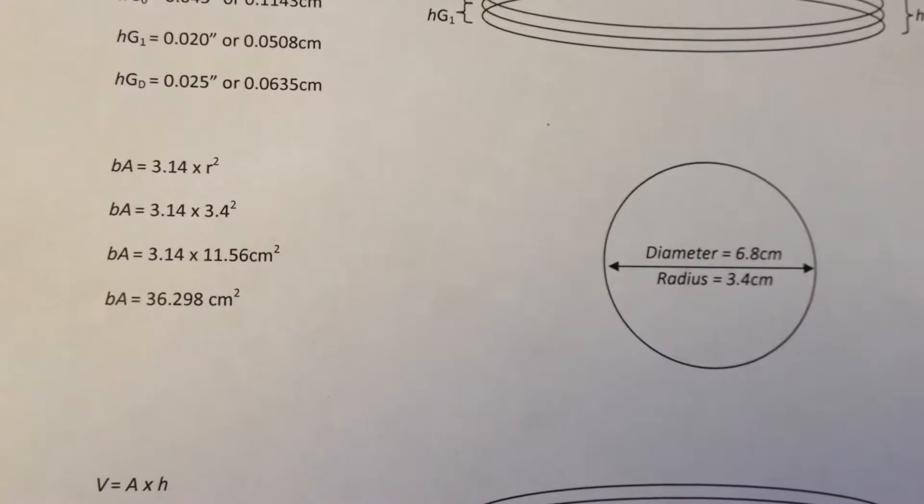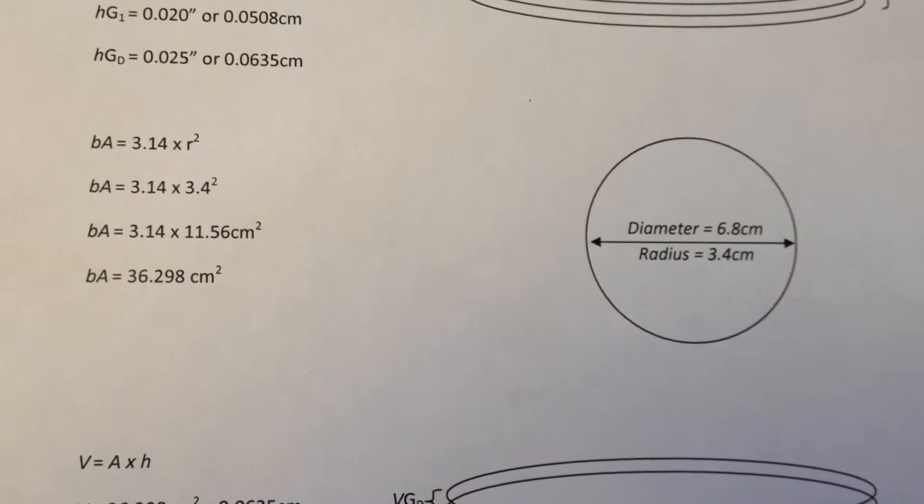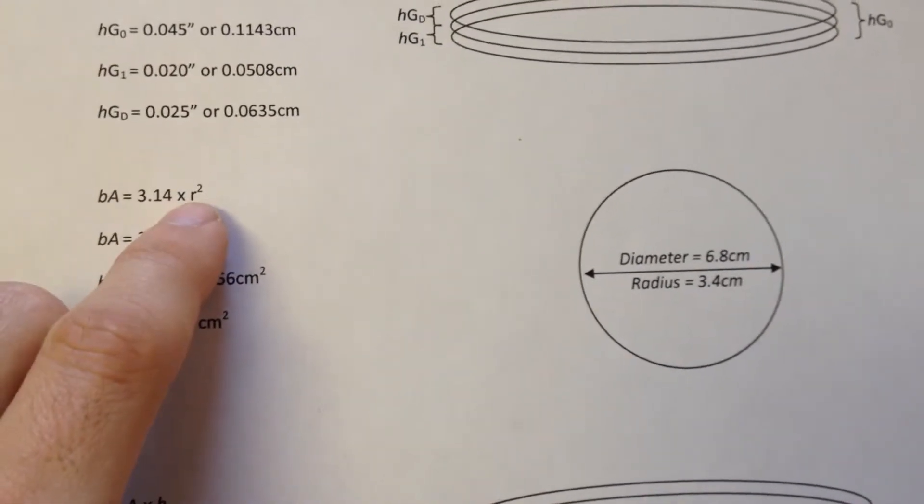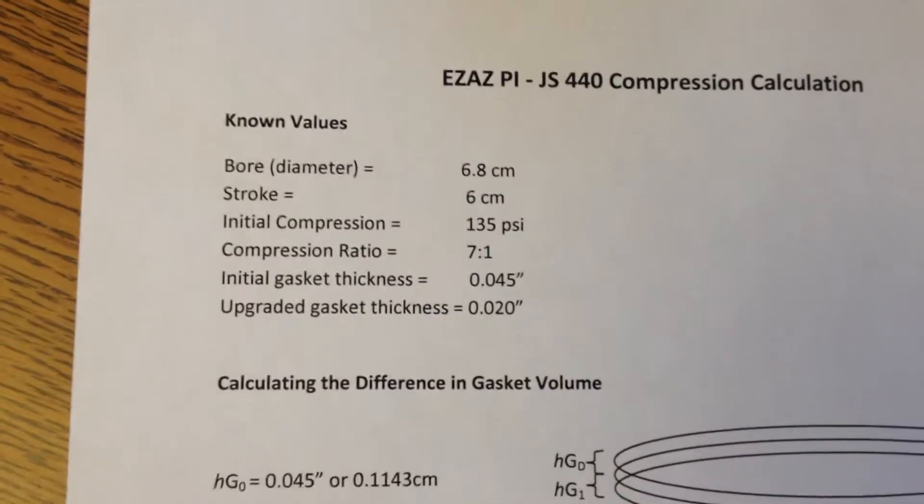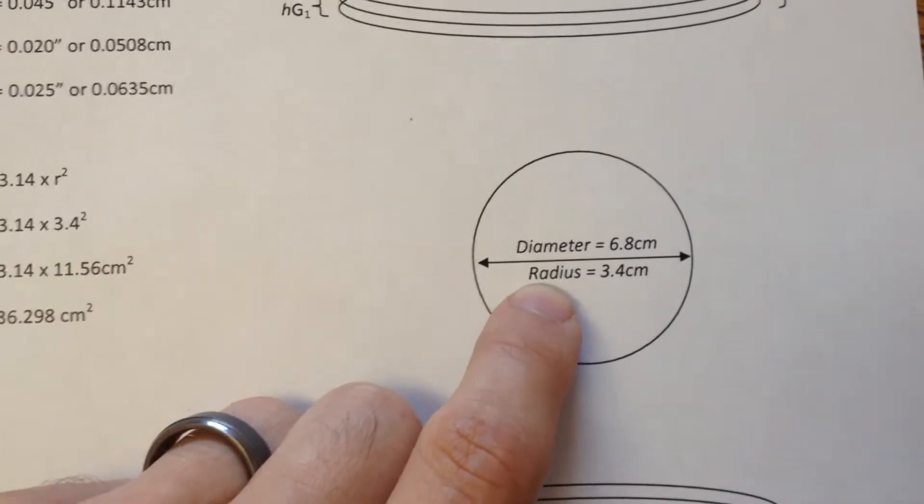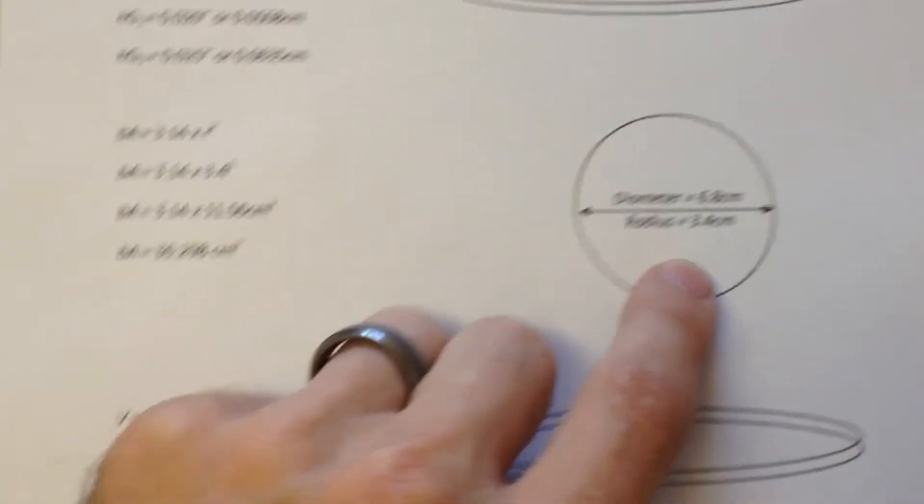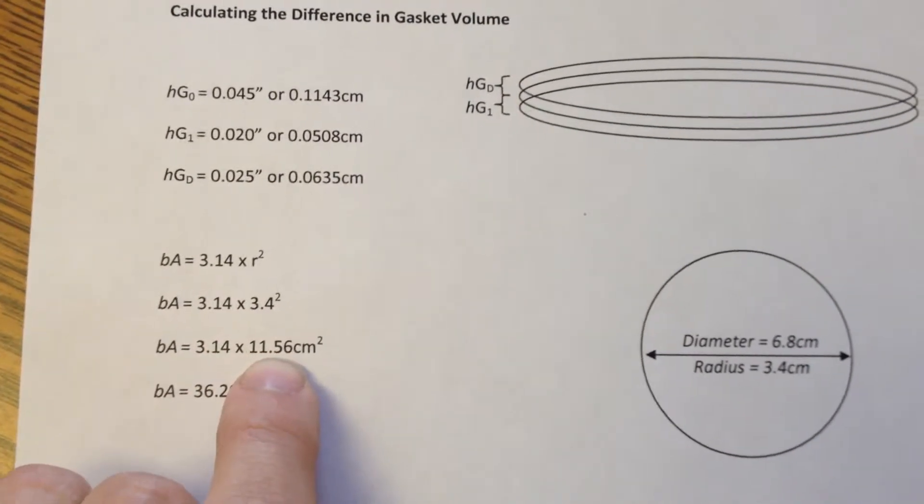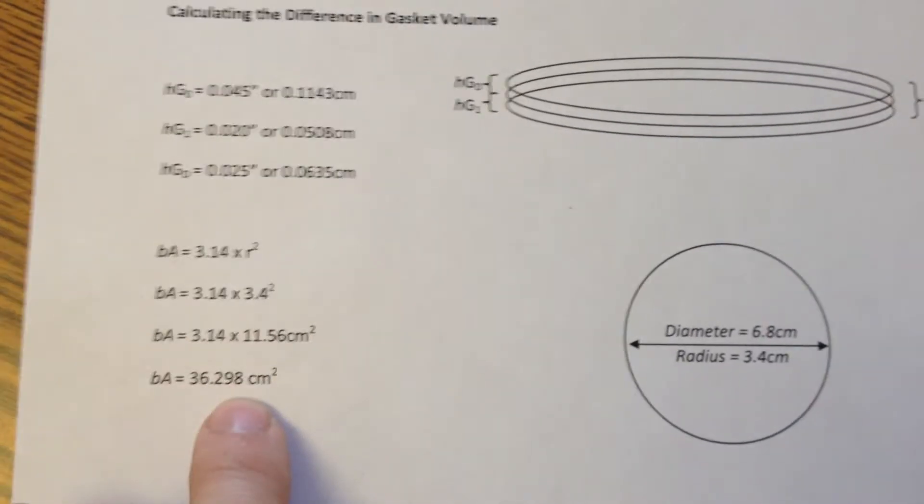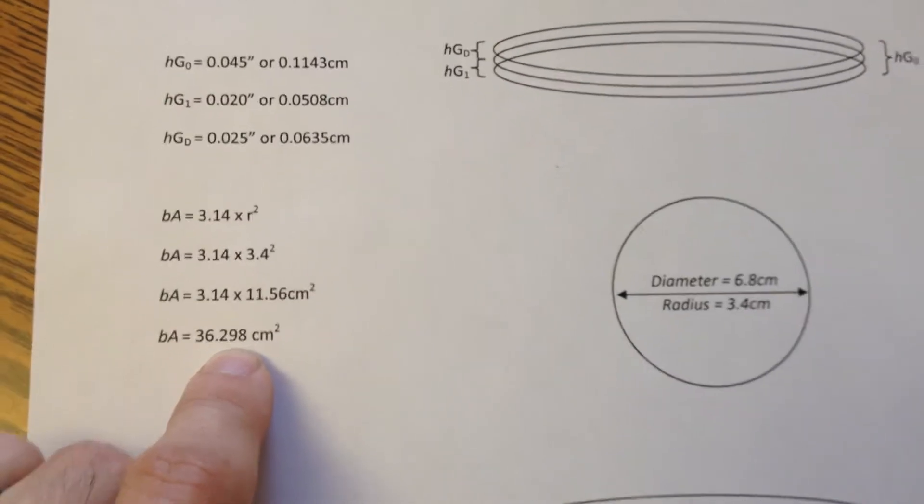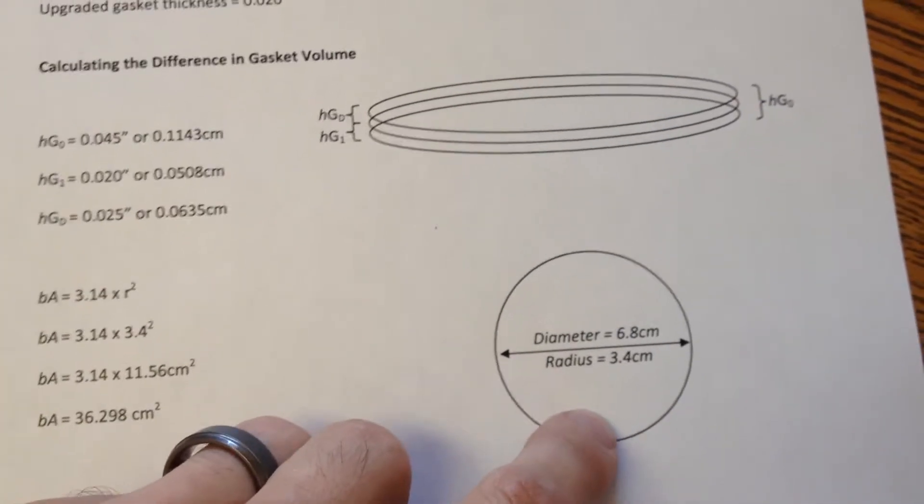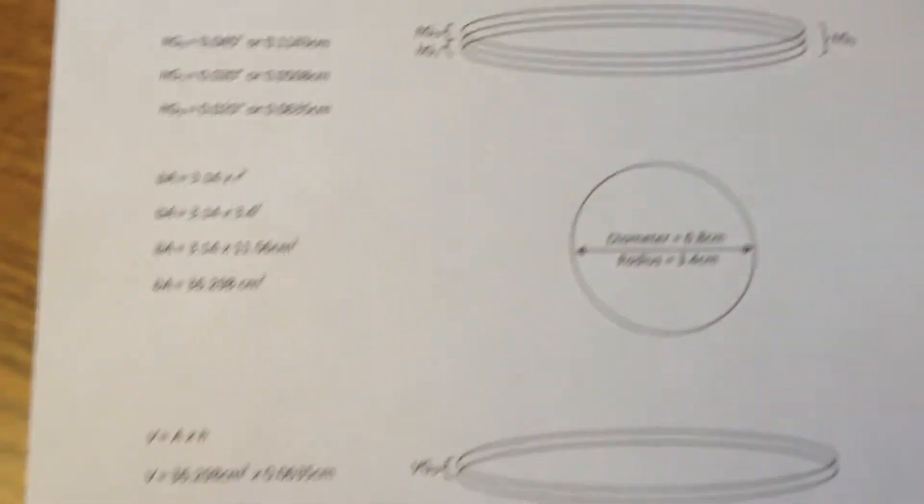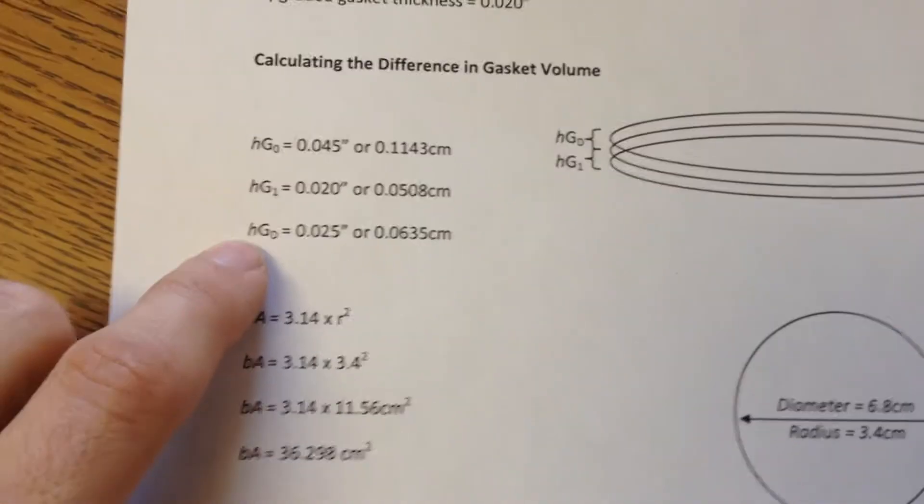Now what we need to do is calculate the volume that that gasket creates inside of the cylinder. So we're just going to use a simple mathematical equation of pi times r squared, r being the radius. Now we know the diameter, which is the bore, 6.8 centimeters, or 68 millimeters. And the radius is just half that. So that's equal to 3.4 centimeters or 34 millimeters. So using that information, we plug in the radius, 3.4 centimeters, into the equation, square it, which gives you 11.56 centimeters squared times 3.14 equals 36.29 square centimeters. So if you were to put in little square centimeter blocks all over in this space here, you would need approximately 36.3 to fill that entire area.